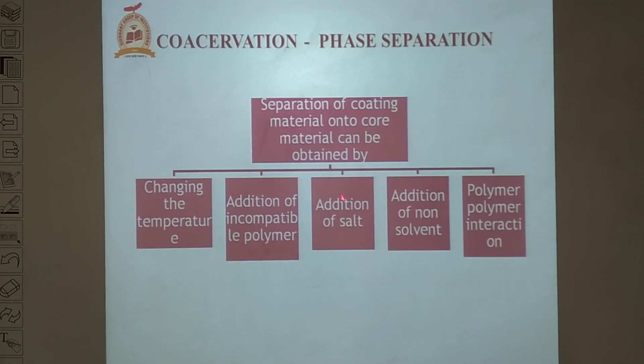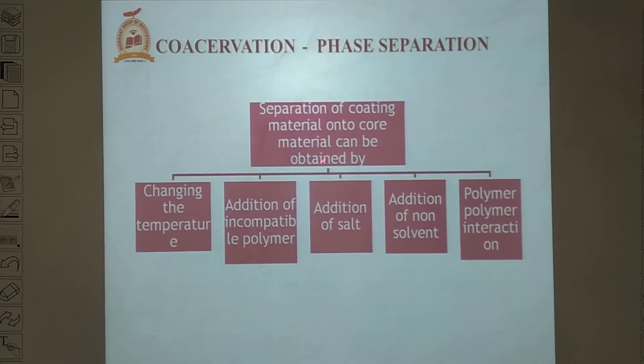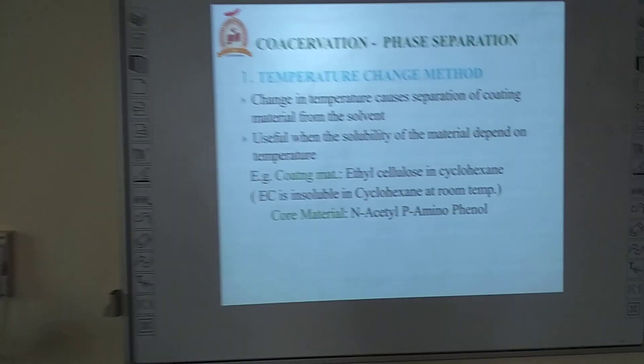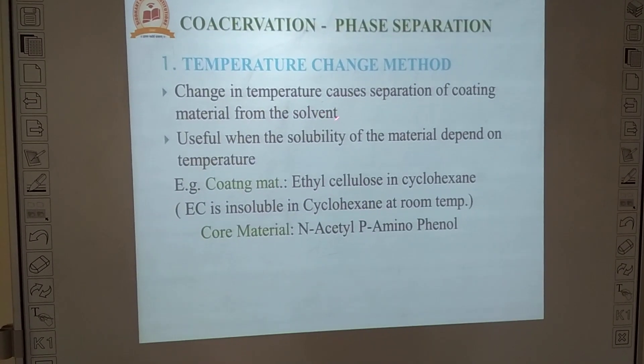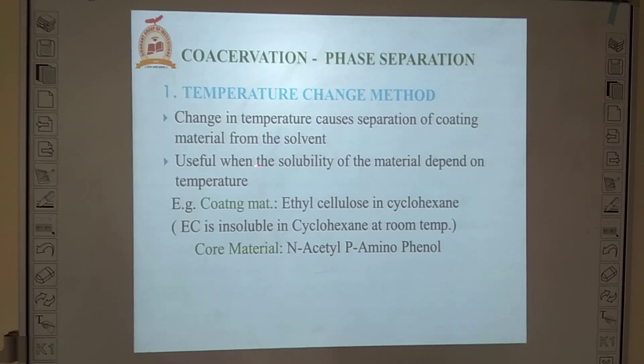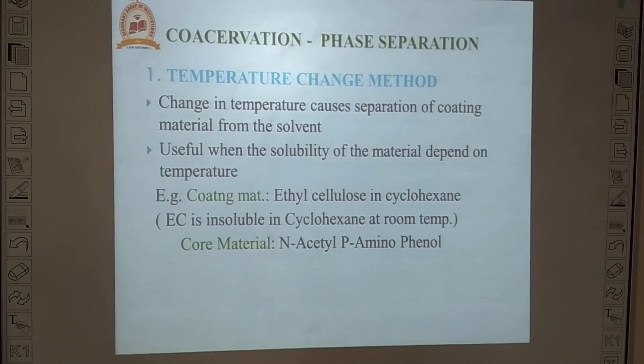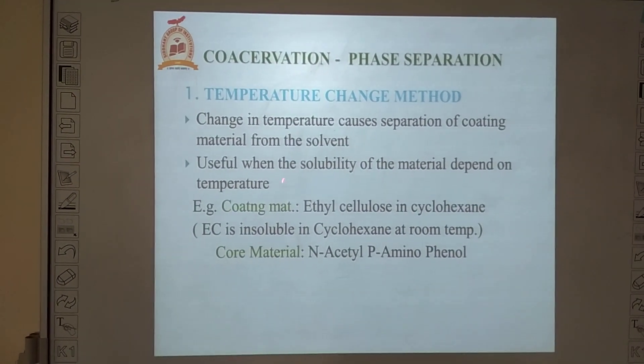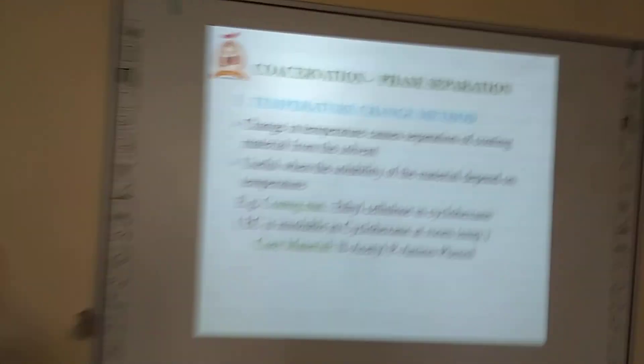The first method is the temperature change method — how by changing temperature we can precipitate out the coating material around the core material. Change in temperature is used for the separation of coating material from the solvent, and it is useful when the solubility of the material depends upon the temperature. In this example, the core material is N-acetyl-para-aminophenol, which is paracetamol. The coating material is ethyl cellulose, and the solvent used is cyclohexane.